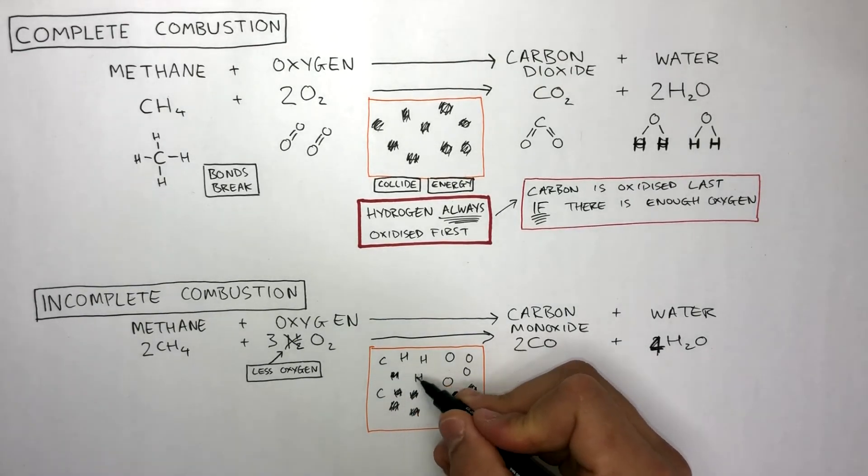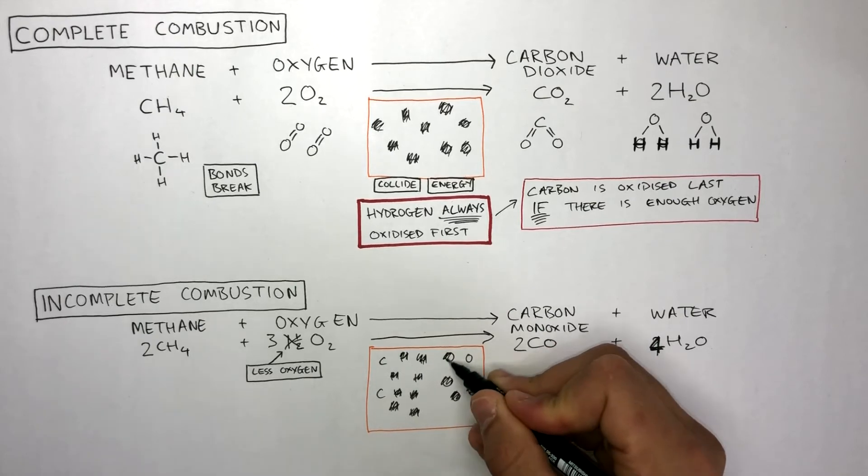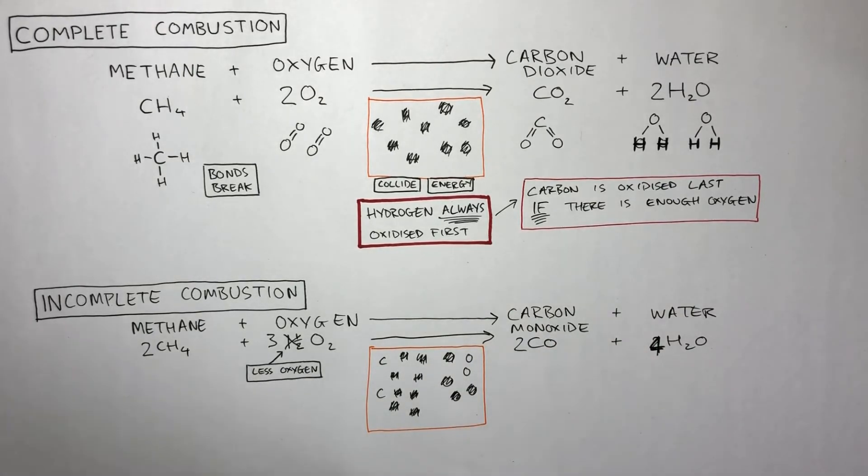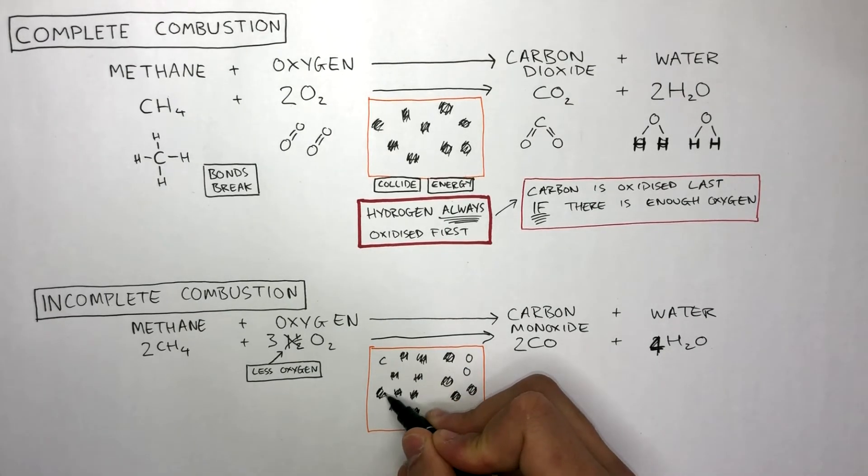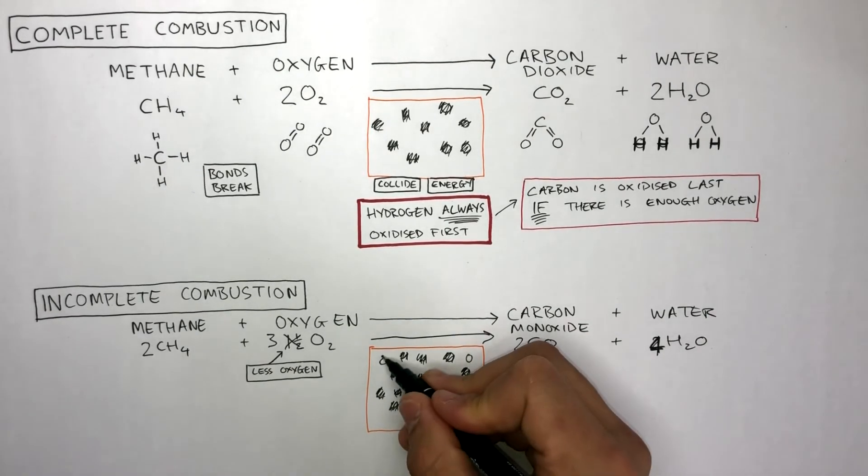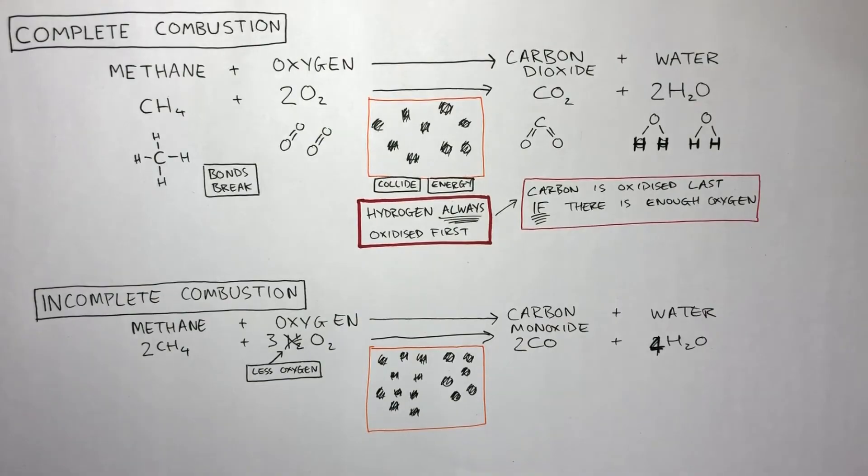one oxygen atom is needed to oxidize them. This leaves two carbon atoms and two oxygen atoms. You can see there are not enough oxygen atoms to form carbon dioxide. Therefore, carbon monoxide is formed instead.